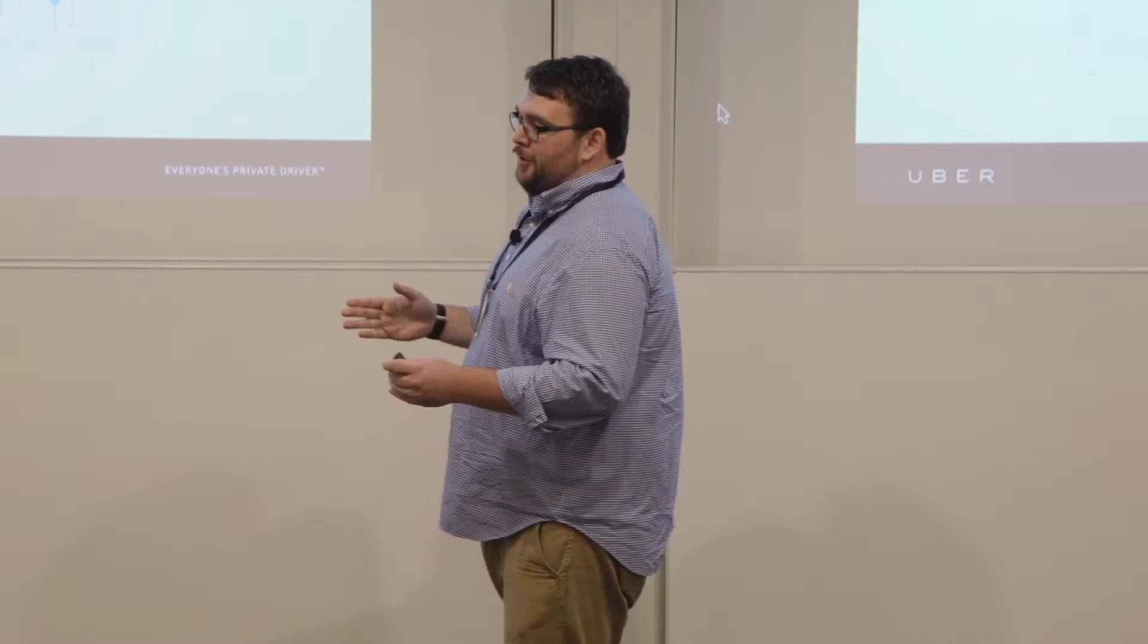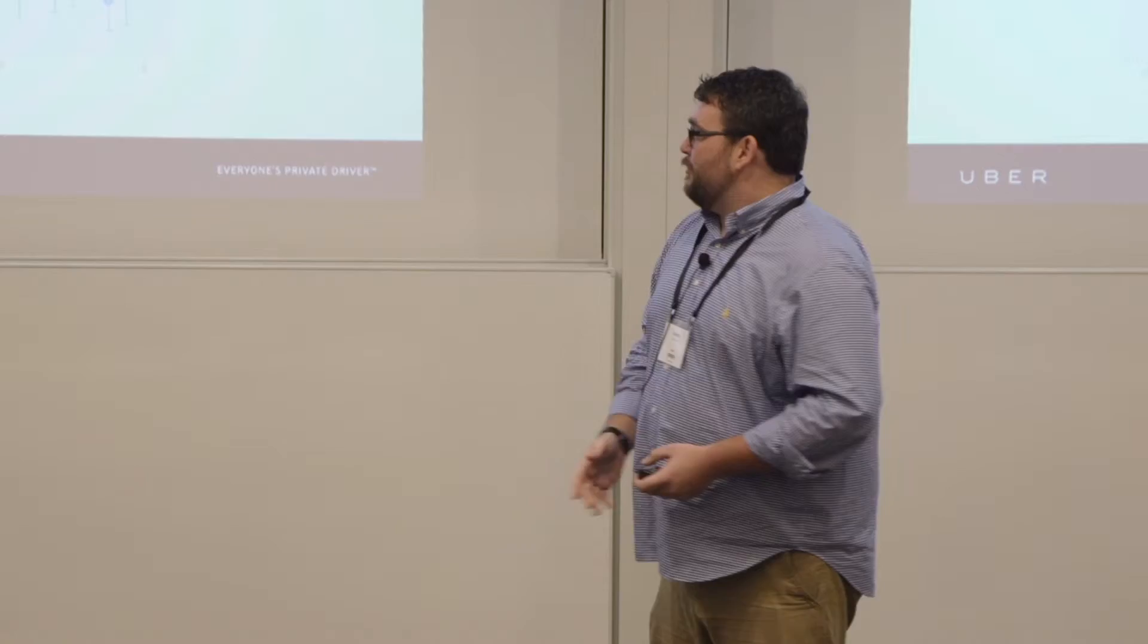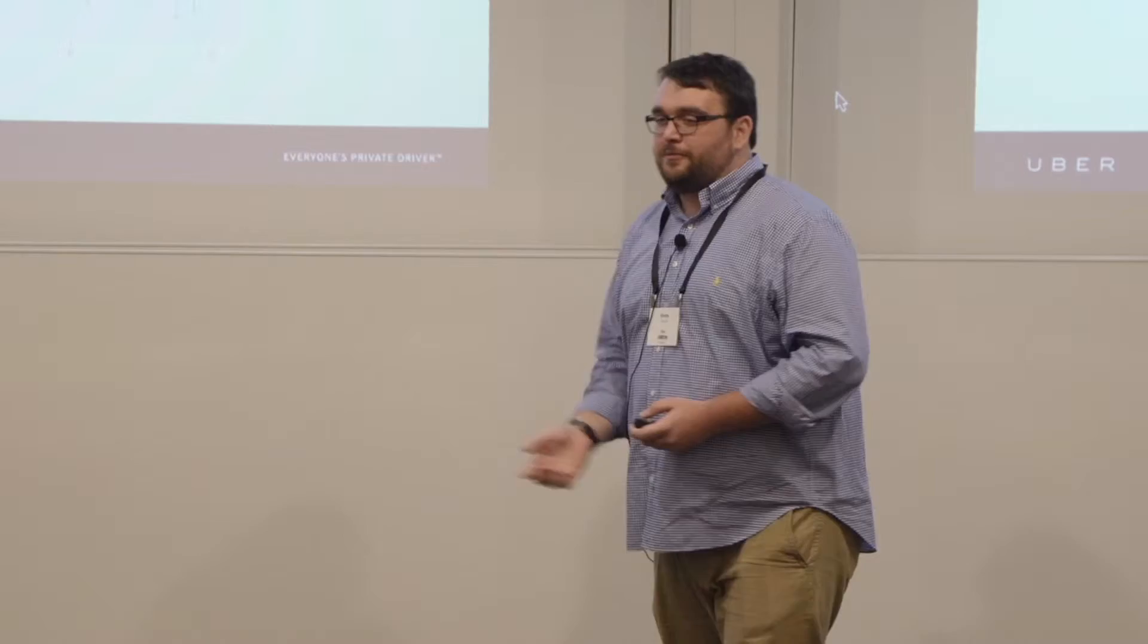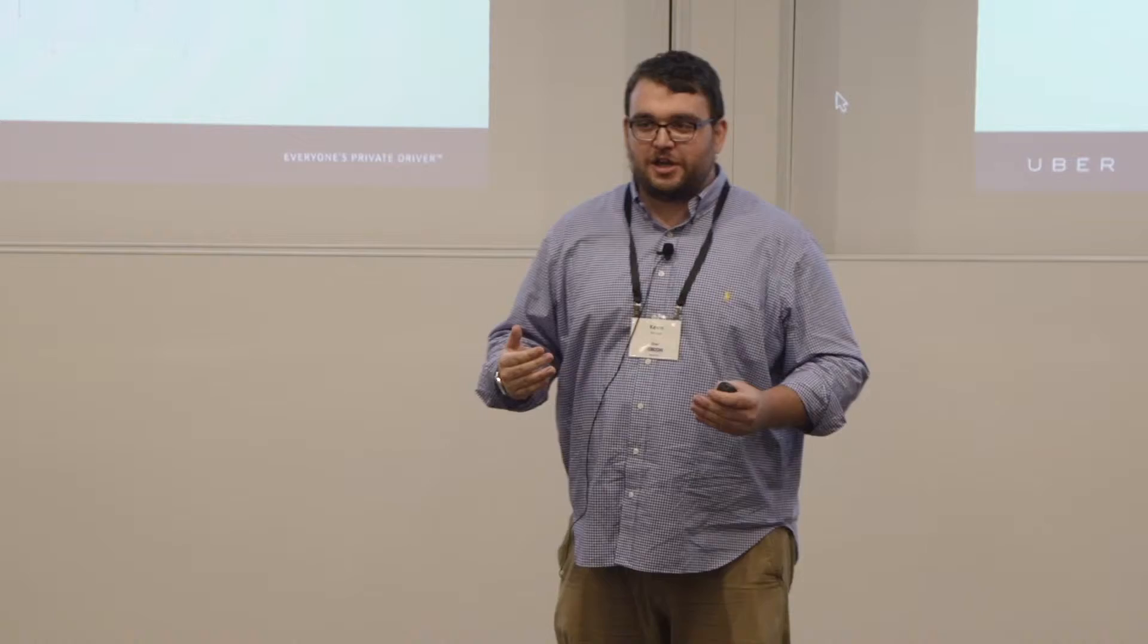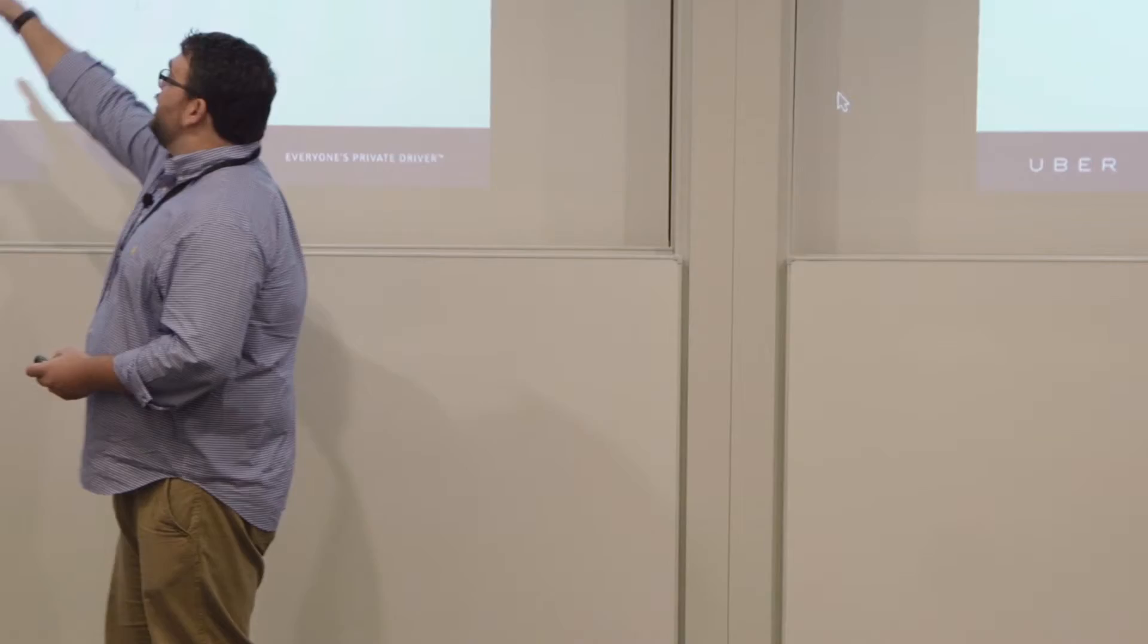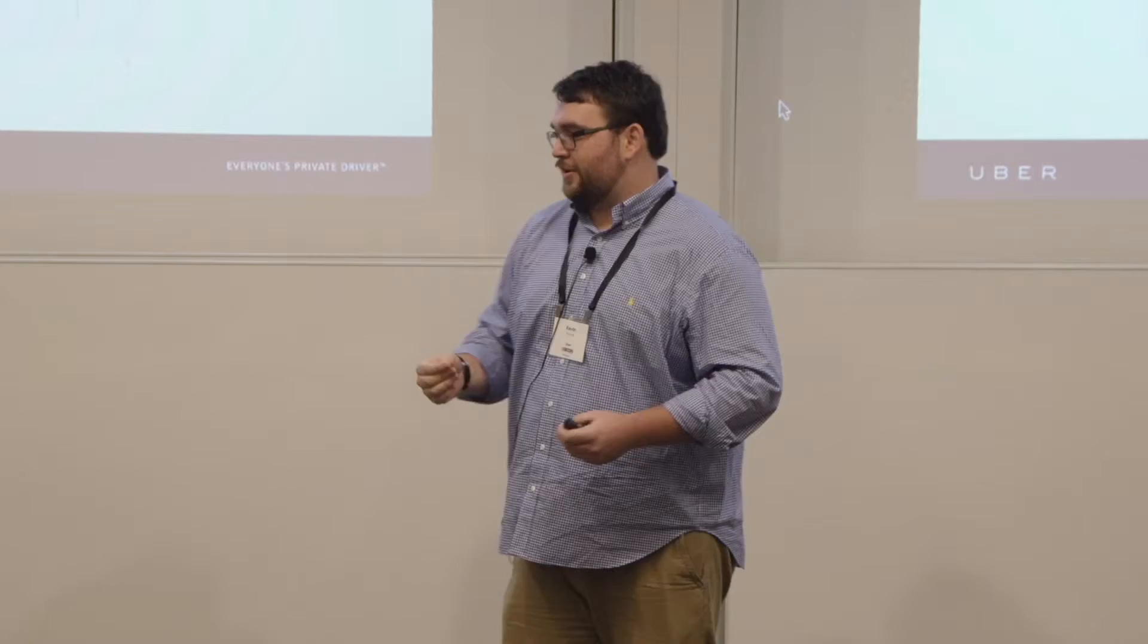The colored dots: red was before January, green was from a two-week period in mid-December when price multipliers got a little bit high. We were running an experiment in New York City but we got great data out of it. Blue is New Year's Eve and beyond. What you can actually see is how customer behavior changes over time.